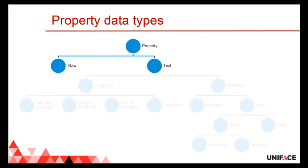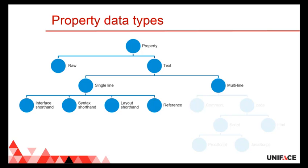Let's have a quick look at some of the property data types and their implicit editing capabilities. A property is either of type text or some other type. The text properties can be divided into single and multi-line properties. This is important because the editor of a single line property typically uses a very small amount of height, whereas multi-lines vary from two to many lines, requiring scroll bars and other means of navigation. Single lines can already be of a complex type, meaning that the text must adhere to a certain syntax, and syntax highlighting and code completion might be in place for such properties.